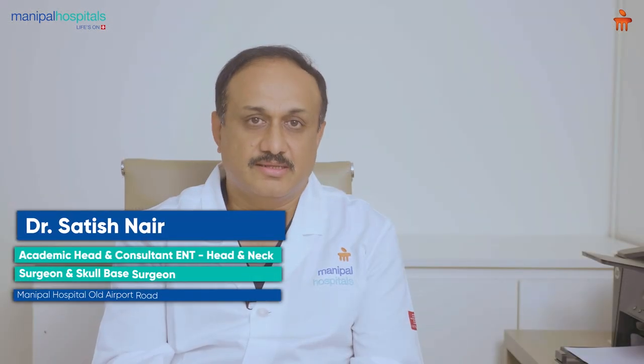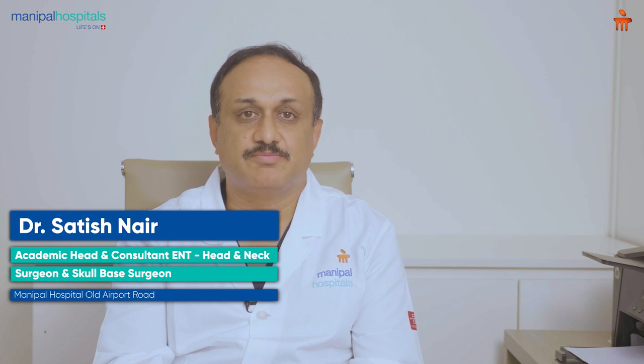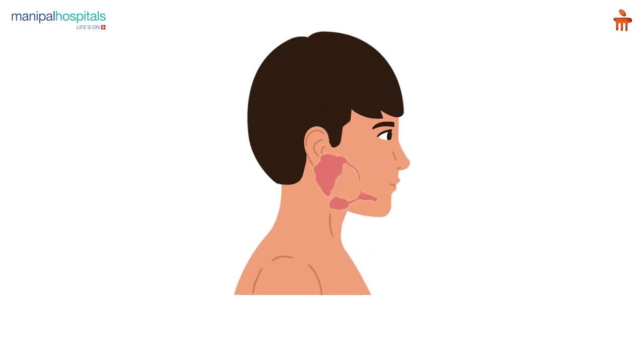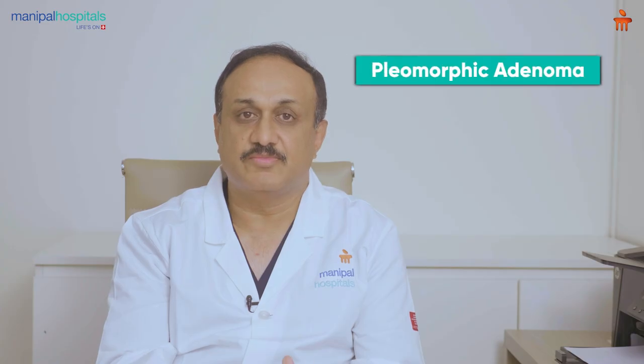The parotid gland is a salivary gland — a gland which produces saliva. These two glands are present on both sides of the face. One of the commonest reasons for swelling in the parotid gland is a benign condition or tumor called pleomorphic adenoma. About 80% of the time when there's a swelling in the parotid gland, it is usually a pleomorphic adenoma, and the rest 20% would be other conditions.